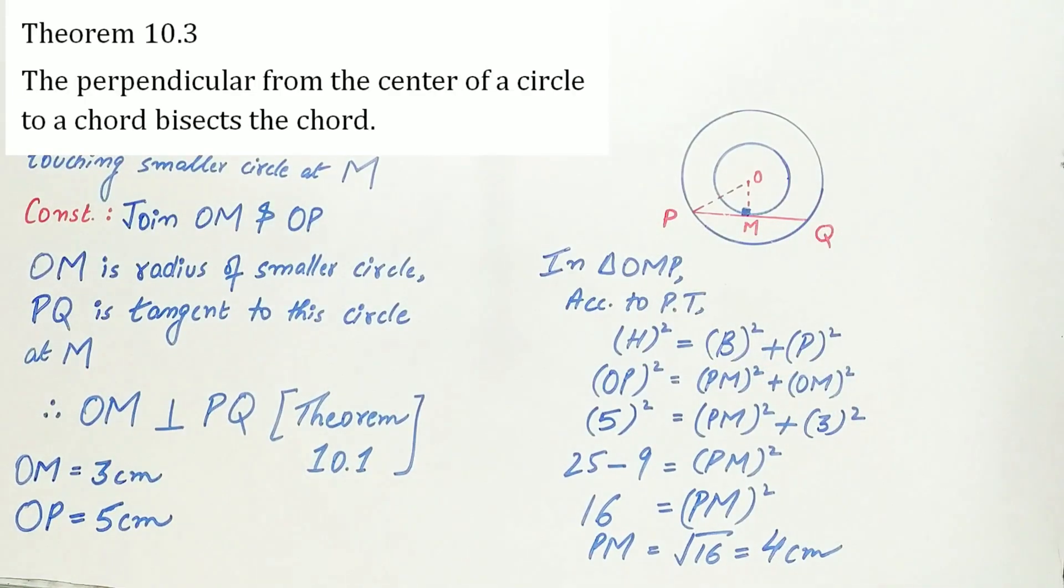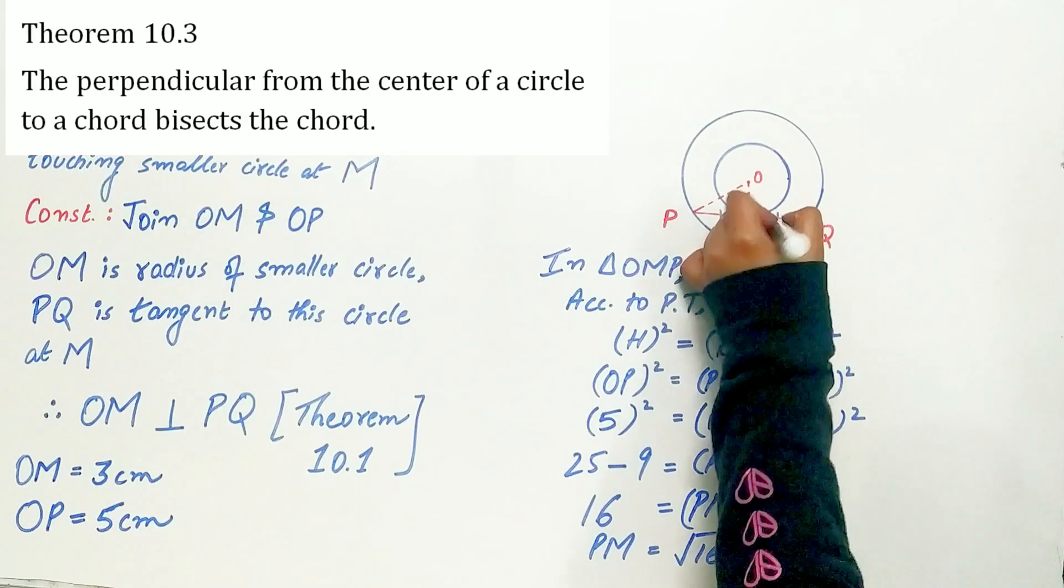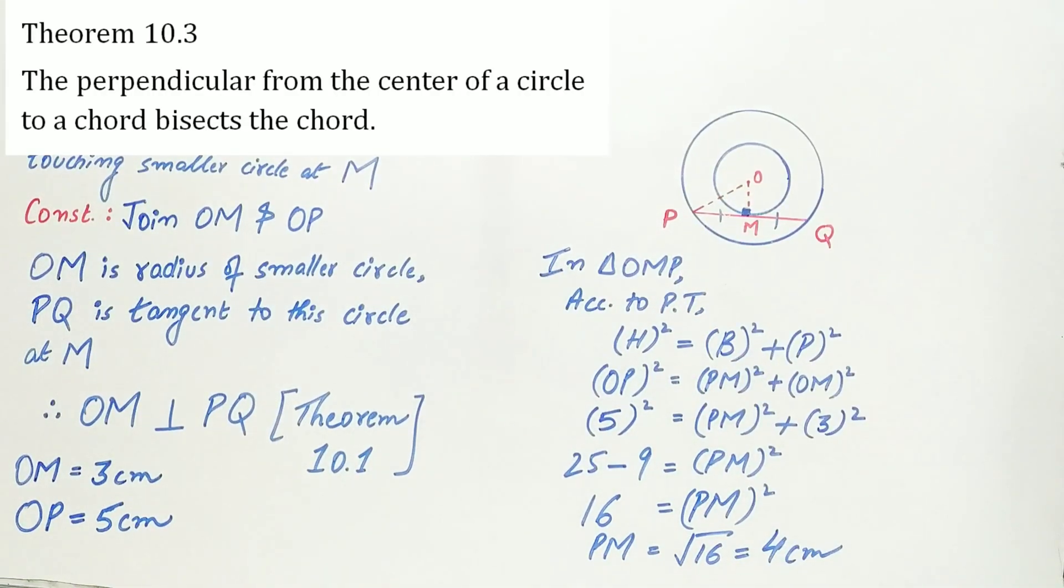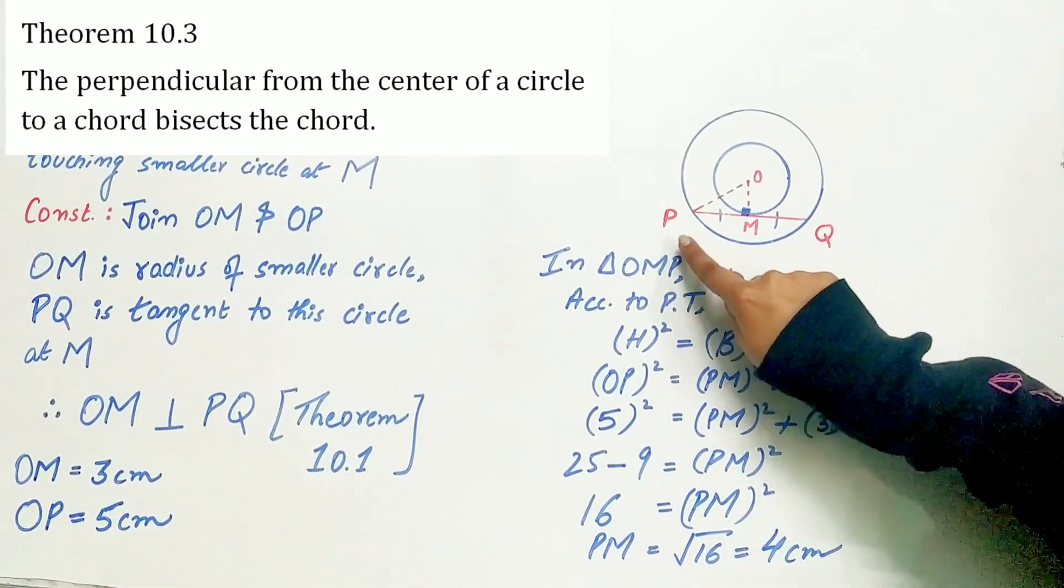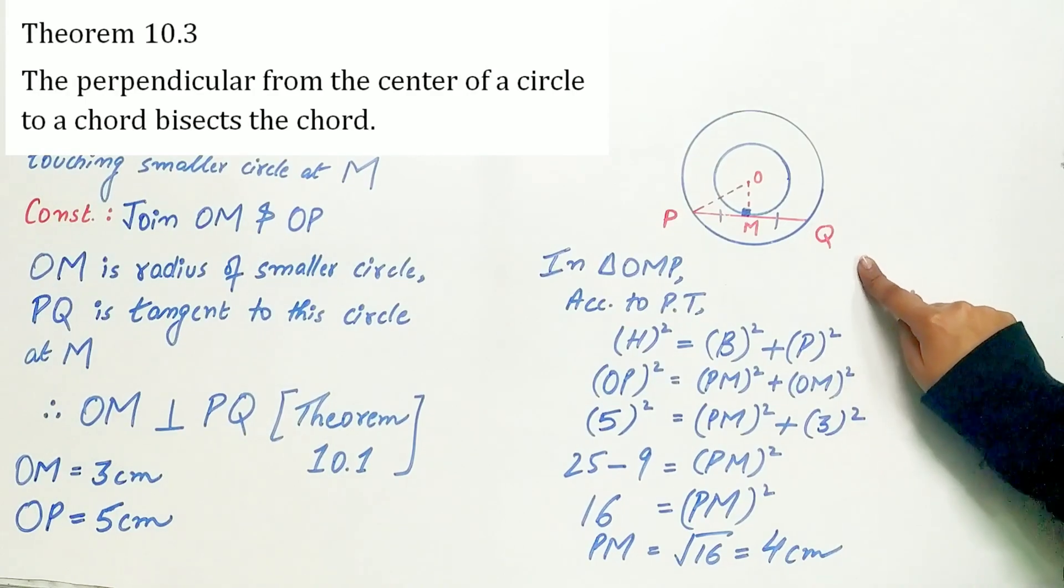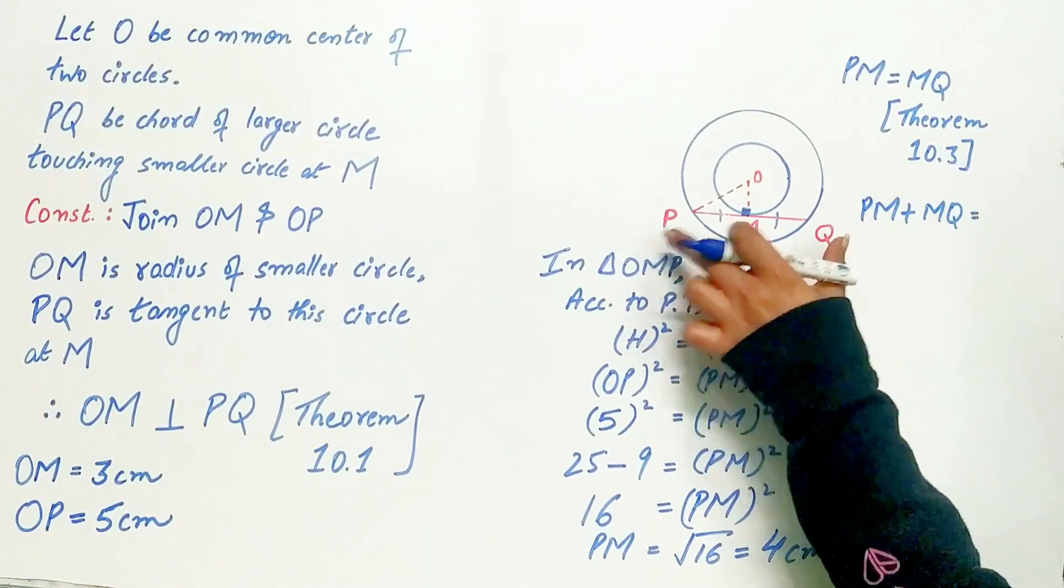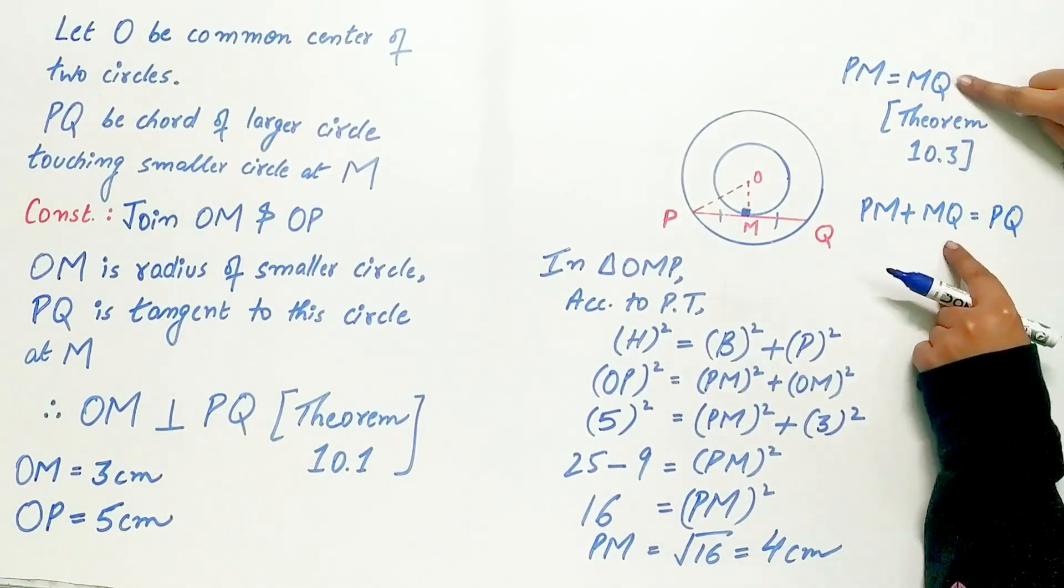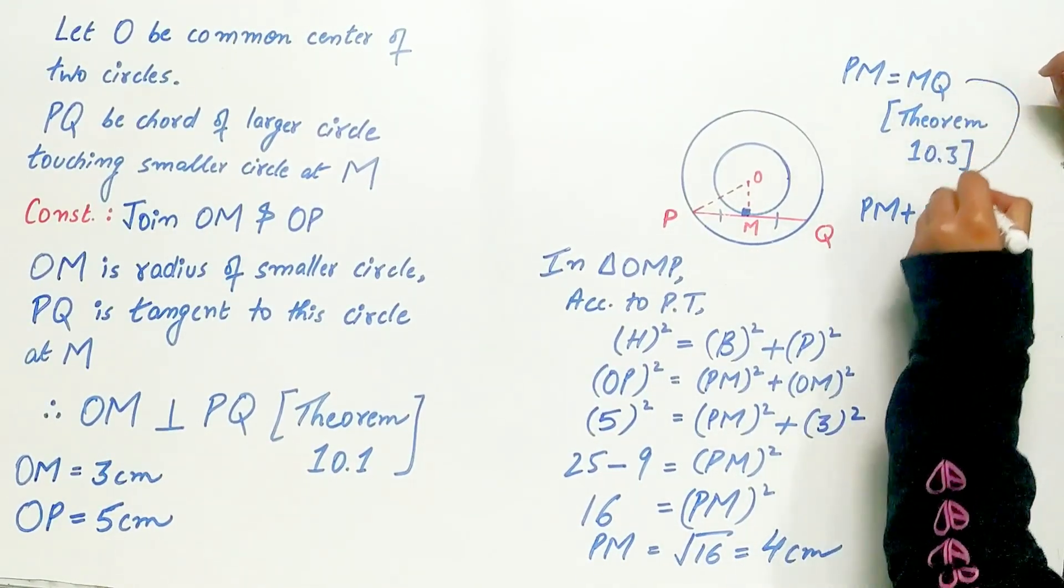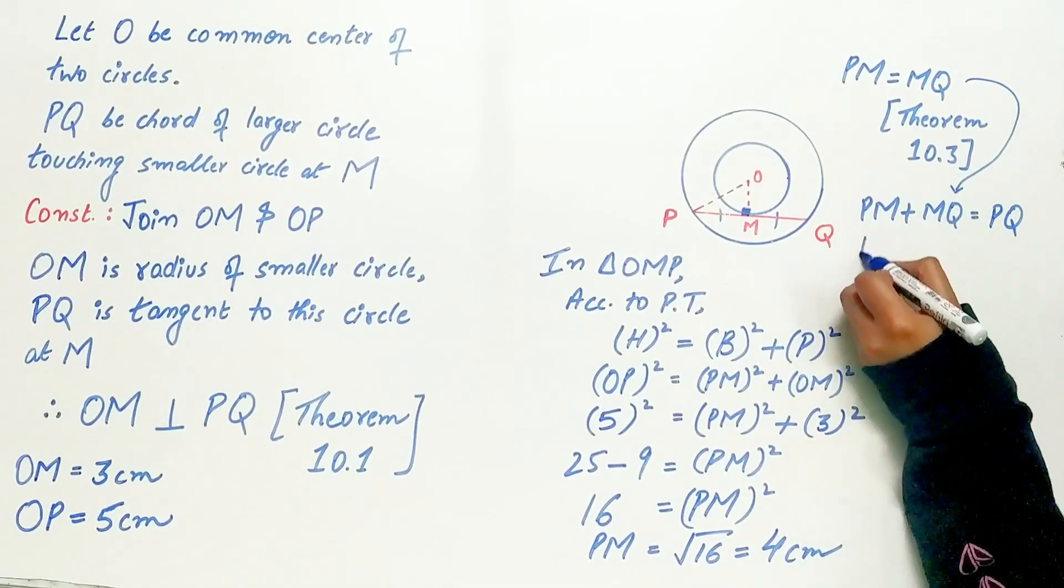So according to theorem 10.3, PM is equal to MQ. Now PM plus MQ is equal to PQ, and MQ is equal to PM. So substitute PM in place of MQ.